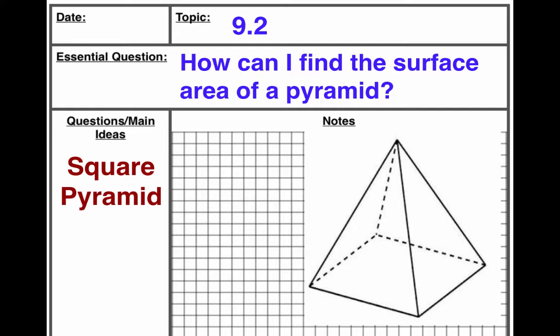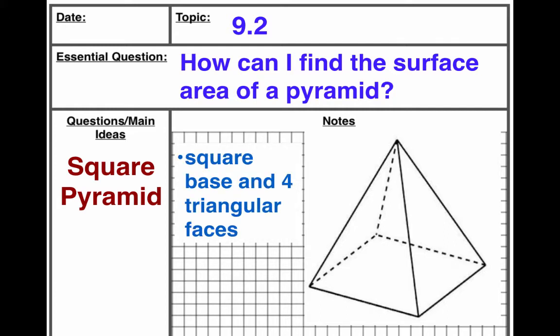Now we're going to draw this in our notebook. First off, a little note: square base has four triangular faces. Because the square has four sides, that means as you walk around the pyramid, there are four triangular faces on this pyramid.